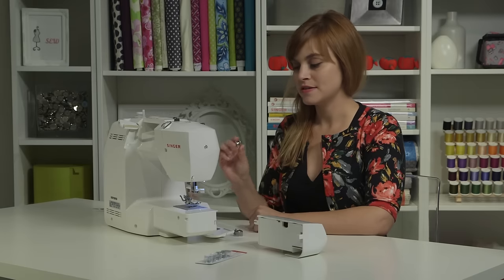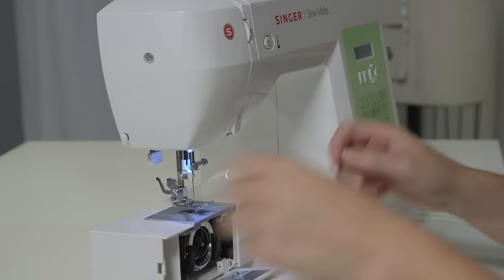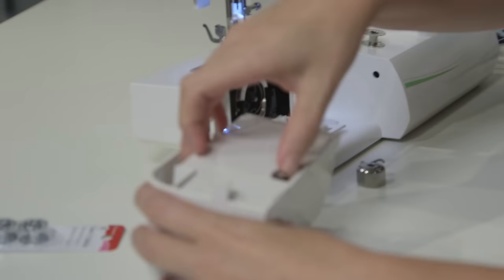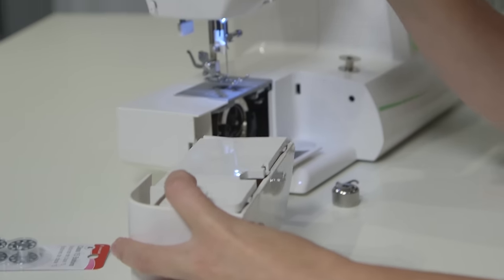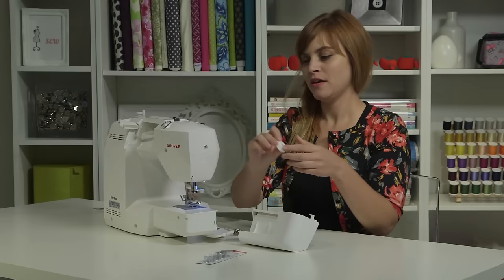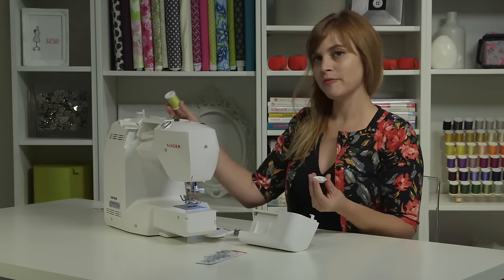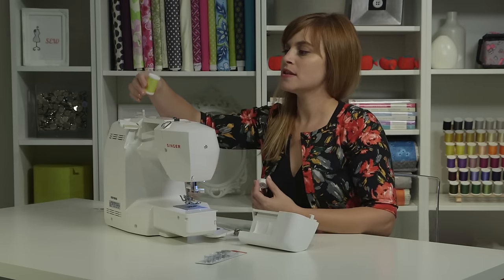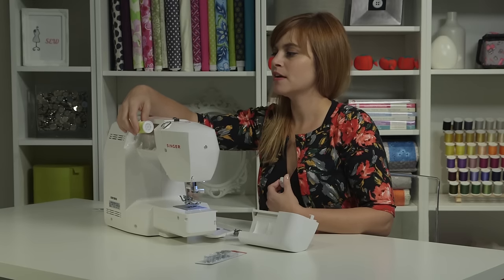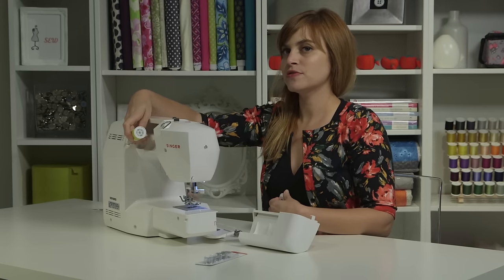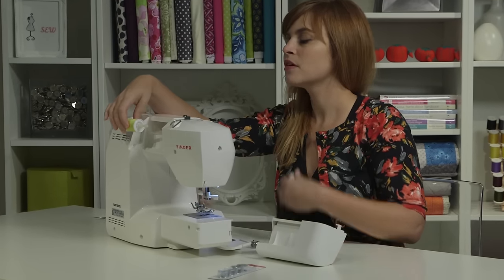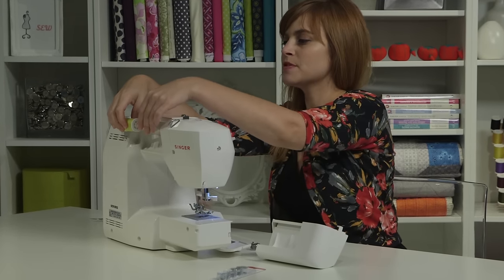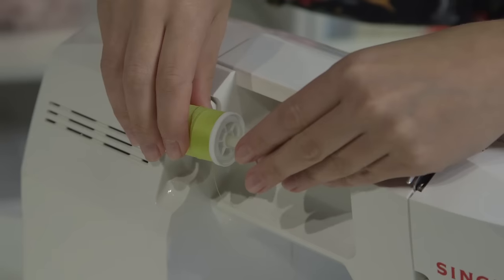I'm going to set the bobbin aside for now and go in my storage compartment to find my spool cap. The spool cap looks like this. We're going to use it to keep our thread in place. I'm going to grab my thread I'm using for my project and put it on the spool pin, which is this piece back here. And remember, you want to make sure that you've swiveled your spool pin out and away from the machine. I'll use my spool cap to put on the end of the spool pin to hold my thread on.